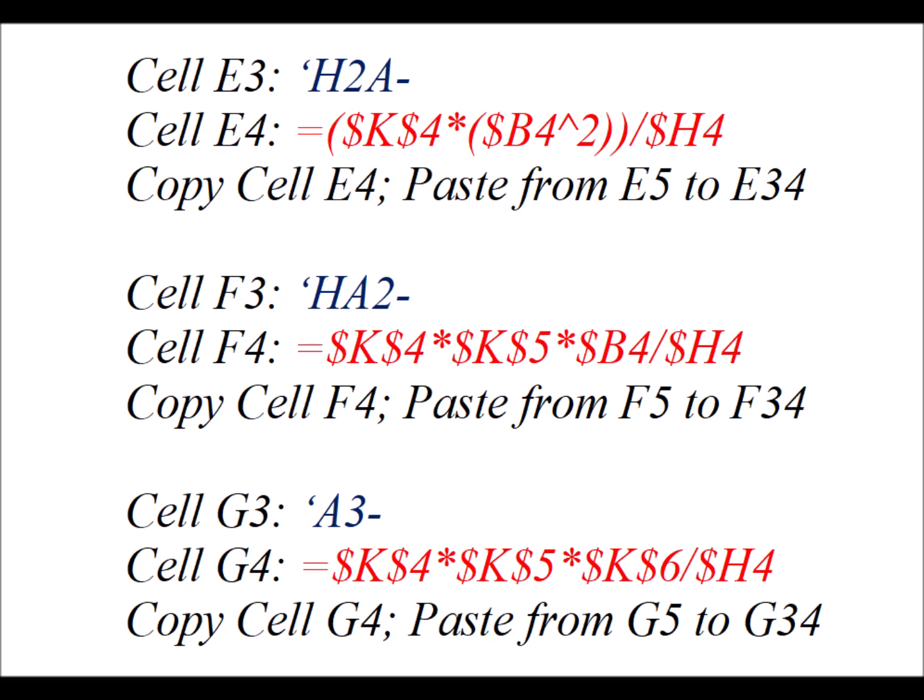In cell F3, we have HA2 minus. So this is the conjugate base of the H2A minus. In cell F4, we have a formula. And then finally, in cell G3, you put the label A3 minus. So this is the most completely deprotonated version of our acid. In cell G4, we have a formula. And we copy that cell G4 and paste it from G5 to G34.